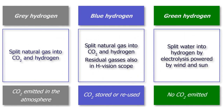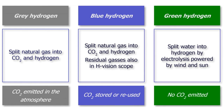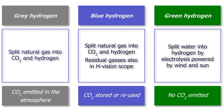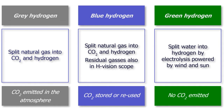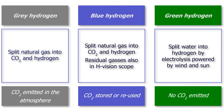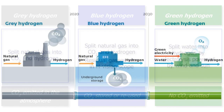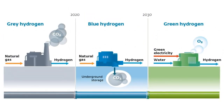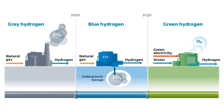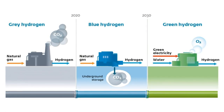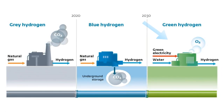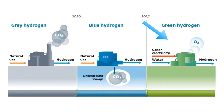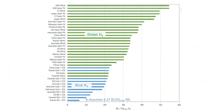Hydrogen's potential can be realized only if its production becomes carbon-free. Currently 98% is generated using carbon-intensive methods, referred to as gray hydrogen. The other 2% is produced via electrolysis, a chemical reaction that splits water into hydrogen and oxygen. Only a tiny proportion of this is currently powered by emission-free renewable energy sources, making it green hydrogen.